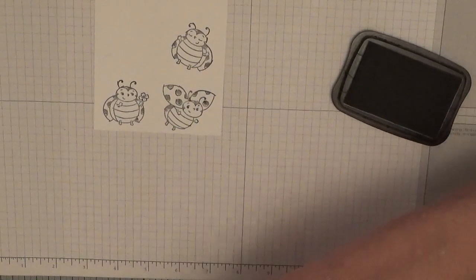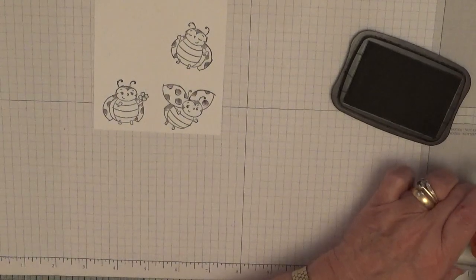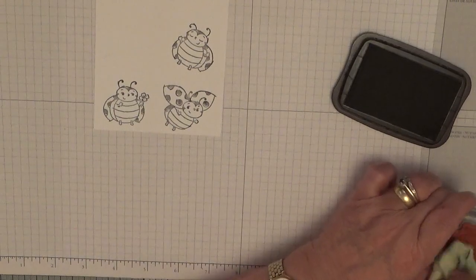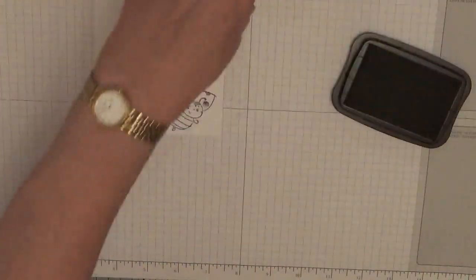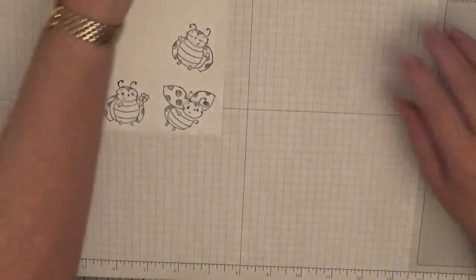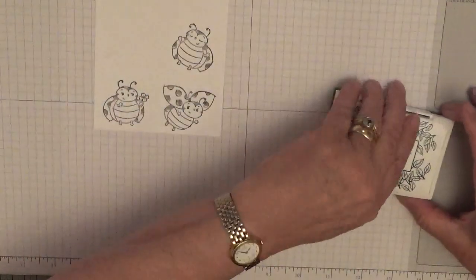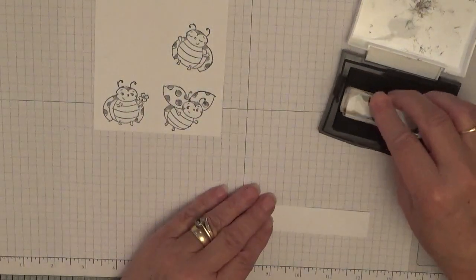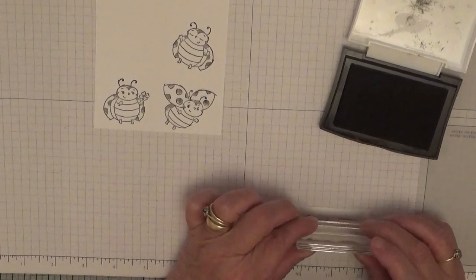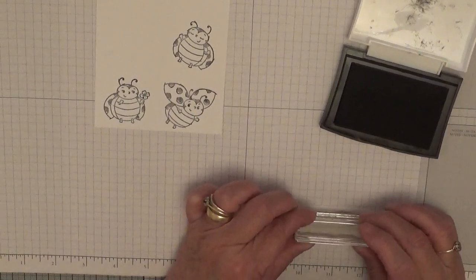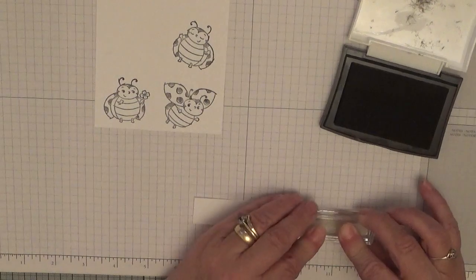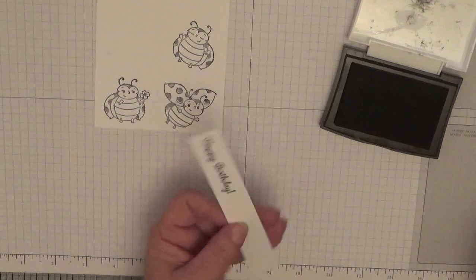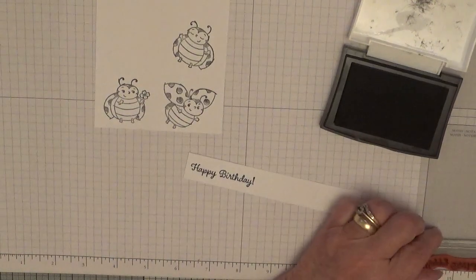And there's another one. Clean my stamps. Put this away. And we're going to use Versafine for the sentiment. And we're just going to pop that there, which is fine.